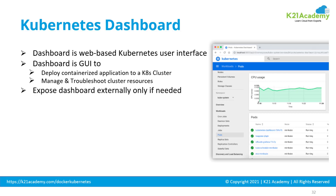You can also see log files. The menu items on the right-hand side include jobs, persistent volumes, networking, replica sets — all those components and artifacts that are part of Kubernetes can be managed from here.